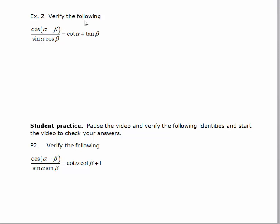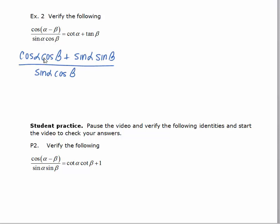Let's verify this first identity: the cosine of alpha minus beta over the sine of alpha times the cosine of beta is equal to the cotangent of alpha plus the tangent of beta. I'm going to start by rewriting cosine of alpha minus beta using the difference formula. It gives us cosine alpha cosine beta plus sine alpha sine beta, all over sine alpha cosine beta.